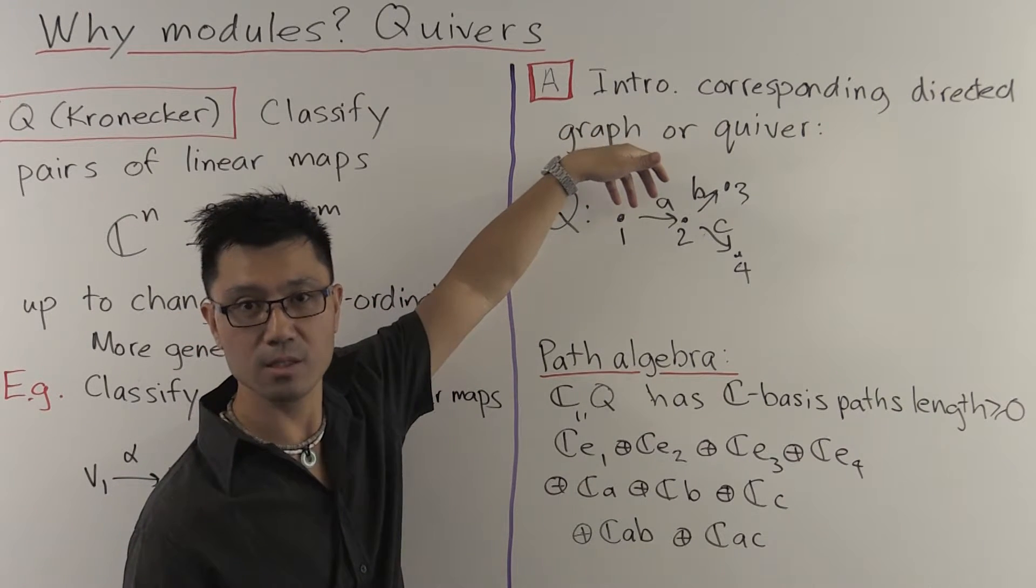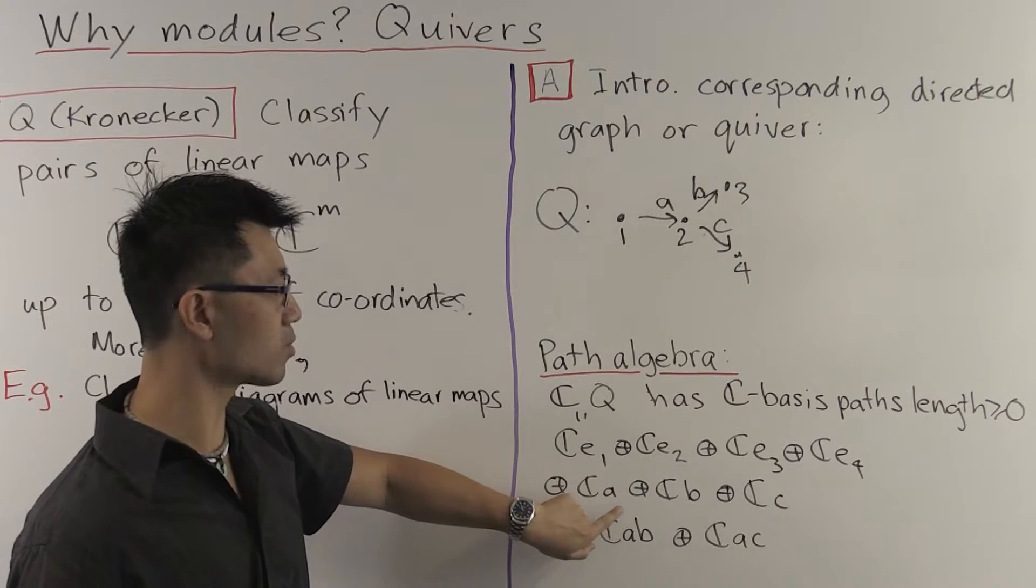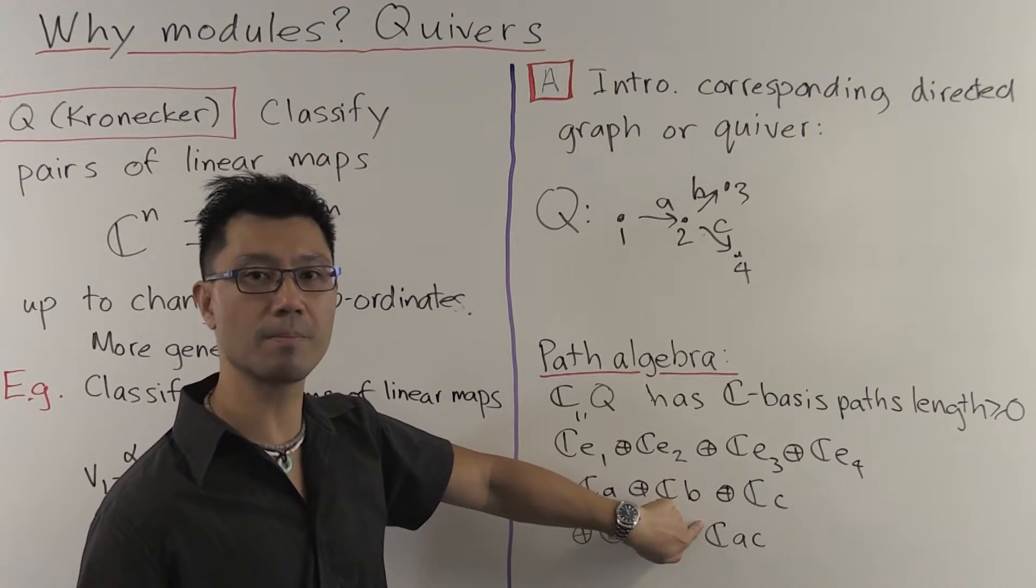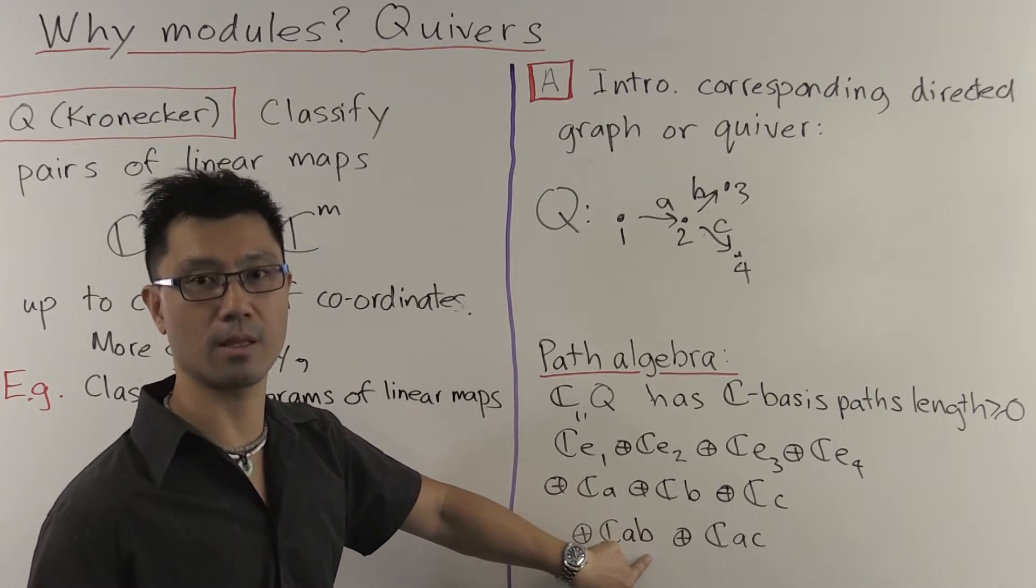Well, that's easy enough. How do you multiply two paths? You just concatenate them. For example, if you multiply A times B, two length 1 paths, you get AB, this length 2 path.